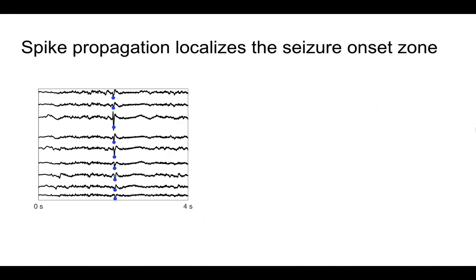We next asked whether spike propagation additionally localizes the seizure onset zone. We identified spike sequences occurring across multiple electrodes at around the same time.